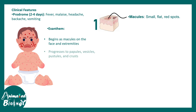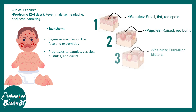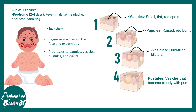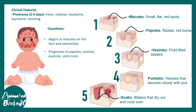Initially the rashes are macules — flat small red spots — which eventually progress into papules, then vesicles which are fluid-filled, and then pustules filled with cloudy pus, ultimately forming crusts or scabs. The lesions are generally concentrated initially on the face and eventually become concentrated on the hands, digits, and extremities of the limbs.